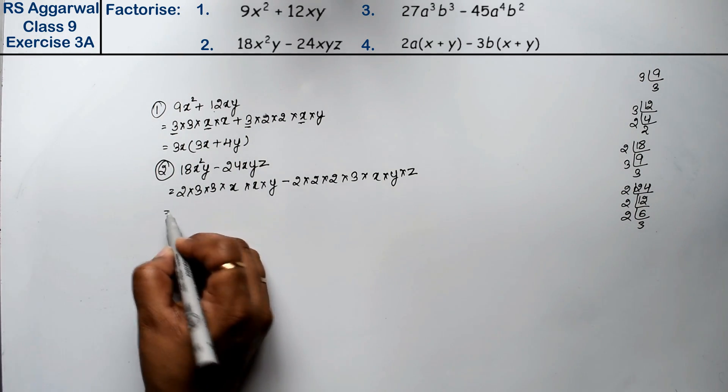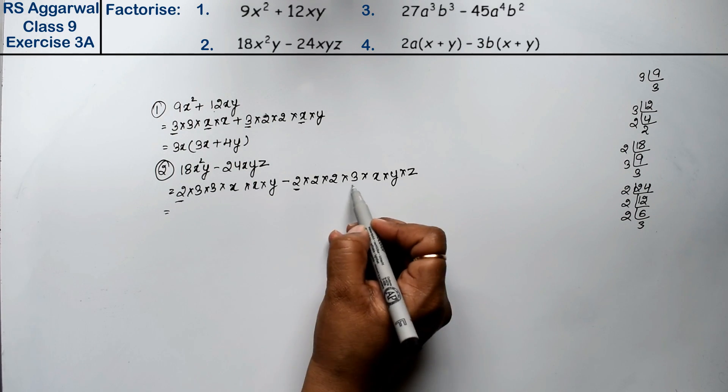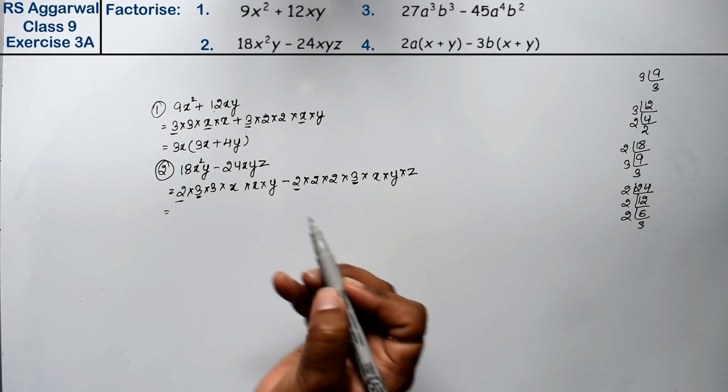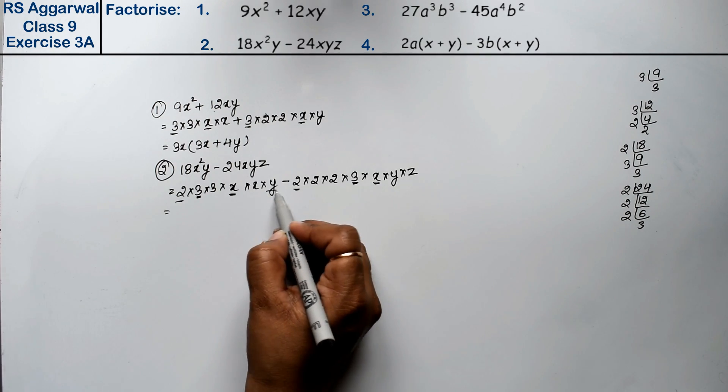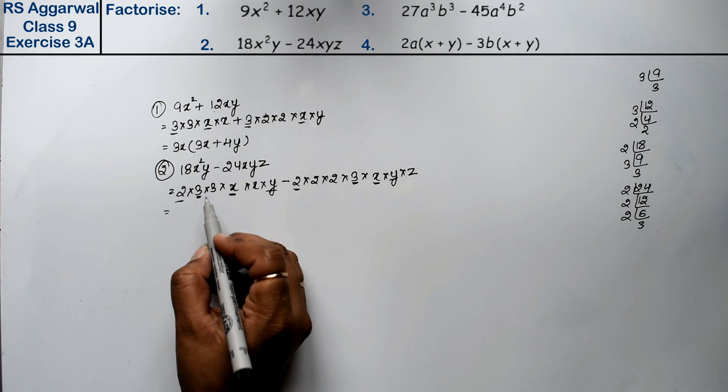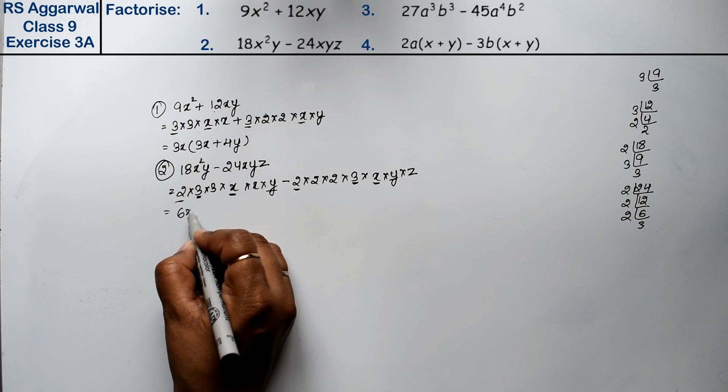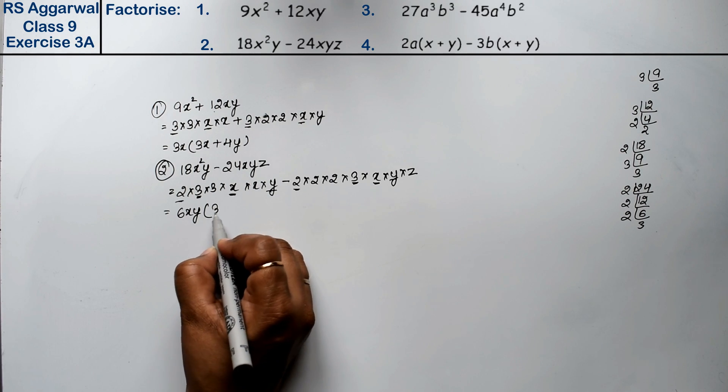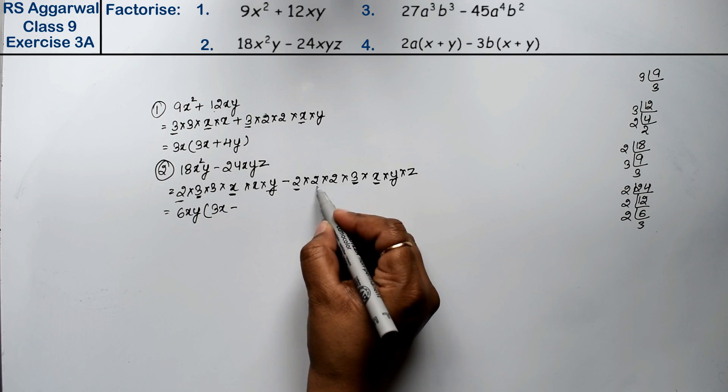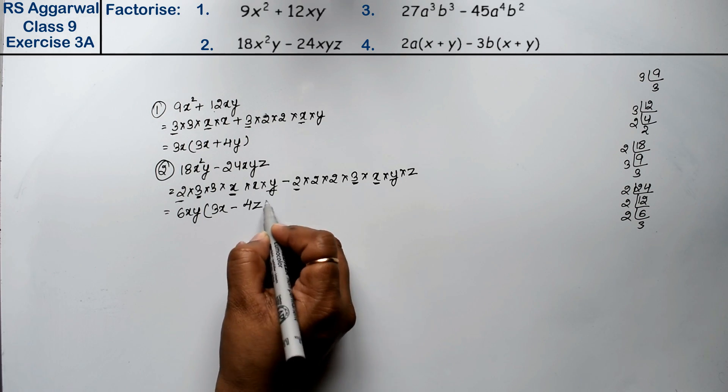Now what is common? Look, 1 is 2 common. 3 is 1, so 1 is common. x is 1, so 1 is common. y is 1, so 2 common. So what is common? 3 × 2 = 6xy. What remains? 3x remains minus, what remains here? 4z remains. That is the answer.